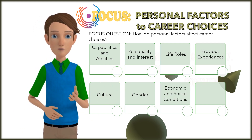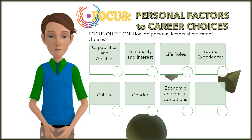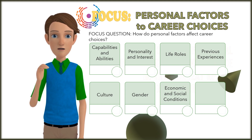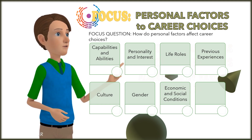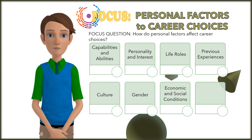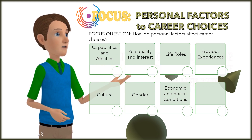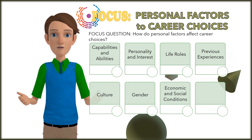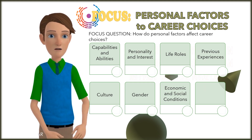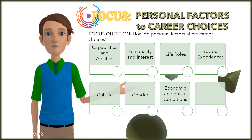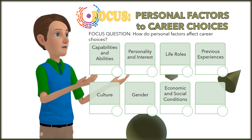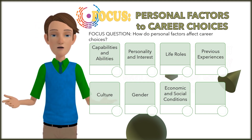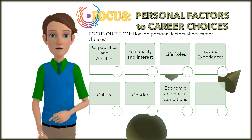Seventh, economic and social conditions. Our professional decisions are always made in the context of the economy and society. This context, as well as many other elements, is addressed by various career theories, including social learning and social cognitive career theory. Certain occurrences in our life can impact our available options and even dictate them to some extent. Changes in the employment market and economy may have an impact on career growth.